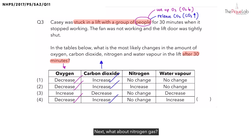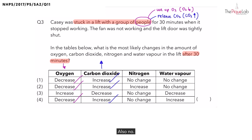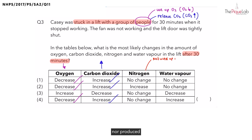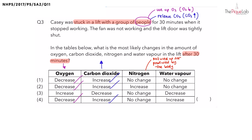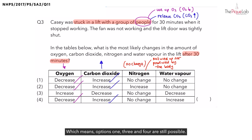Next, what about nitrogen gas? Think about this — do people use up nitrogen? No. Do we produce it? Also no. Nitrogen is not used nor produced by the body. Which means even after 30 minutes, there is going to be no change in the amount of nitrogen. So options 1, 3 and 4 are still possible.